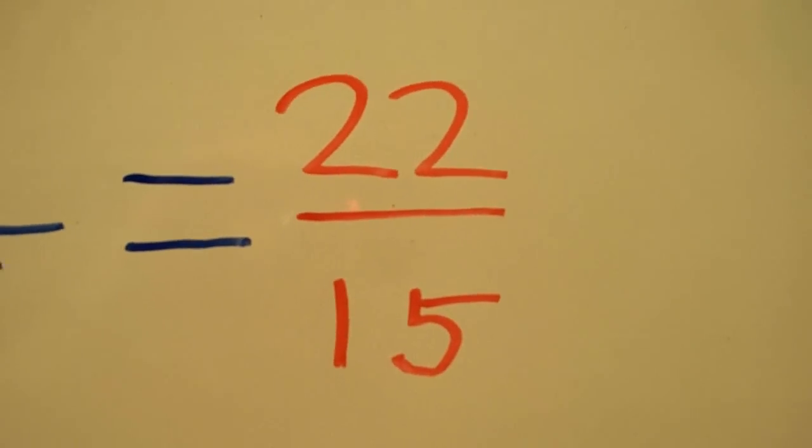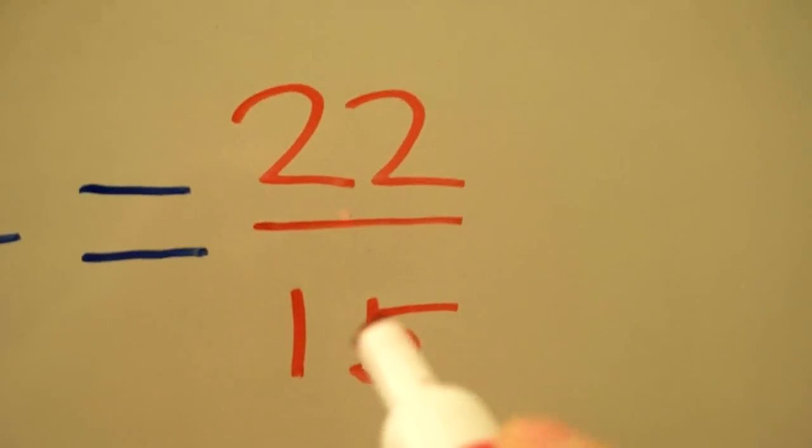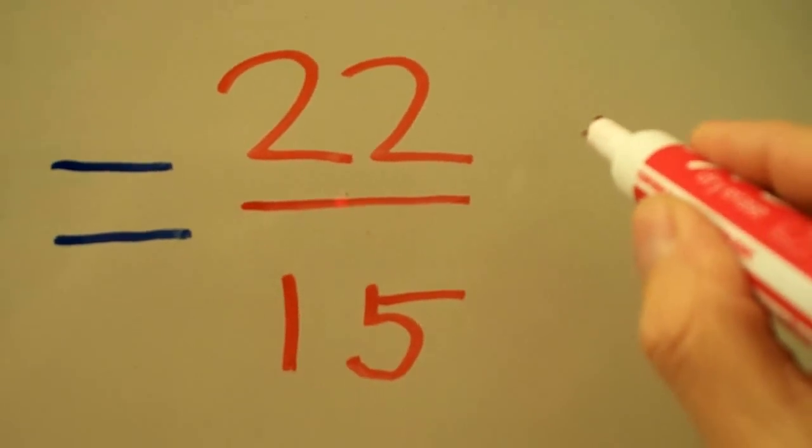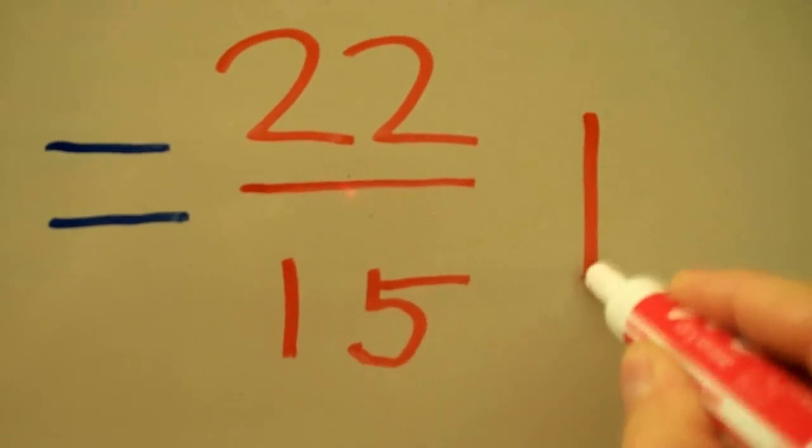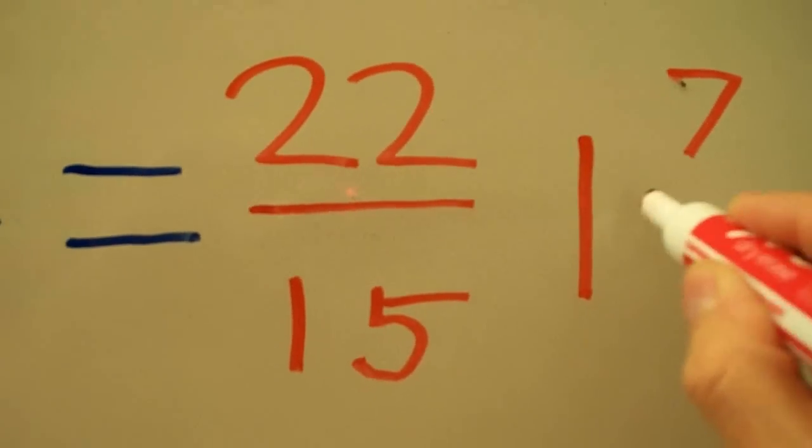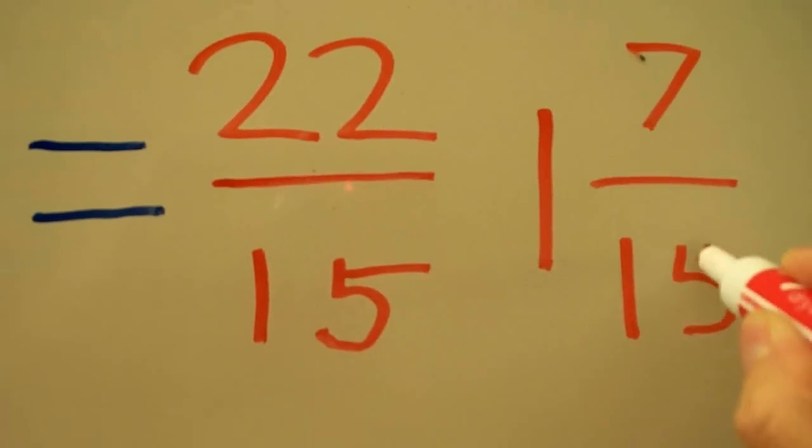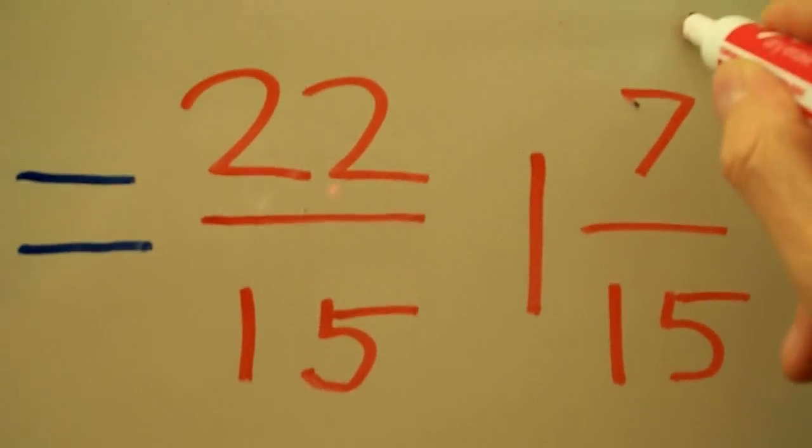In order to make this a mixed number, we ask ourselves, how many times does fifteen go into twenty-two without going over? It goes in once with seven left over, so our final answer is one and seven-fifteenths.